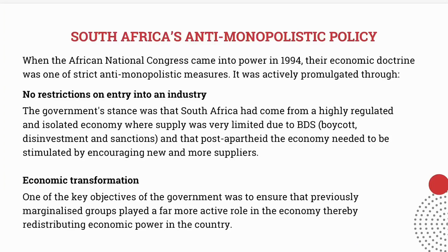Now let's examine the measures government has put in place to promote competition and strongly discourage monopolies. In 1994, South Africa had its first democratic elections and the ANC was voted into power. The new government's stance was that there should be no restrictions on entry into an industry, because during apartheid South Africa was effectively excluded from global trade due to BDS boycotts, disinvestments, and sanctions. For decades, South African consumers had a limited range of goods and services to choose from.